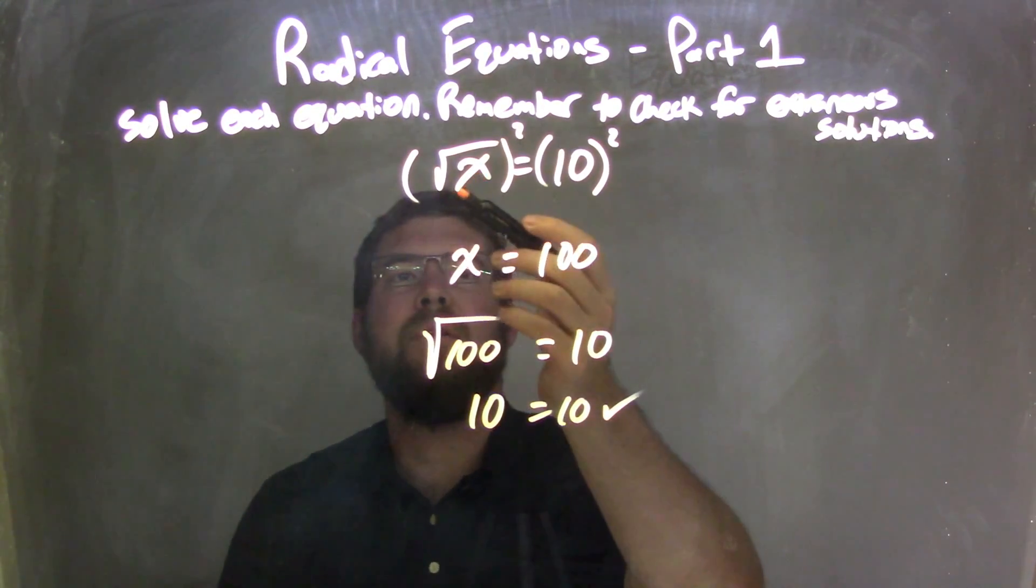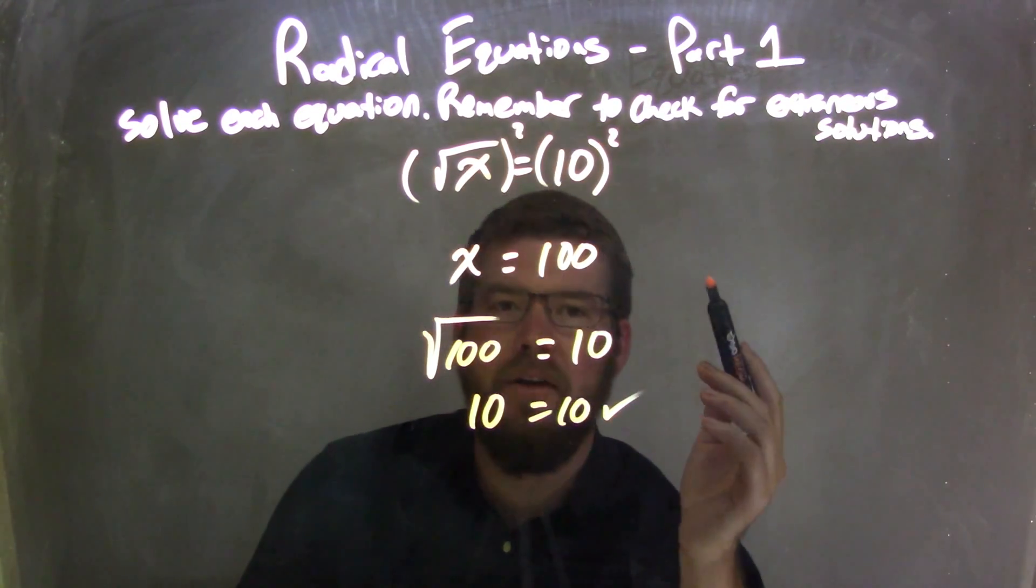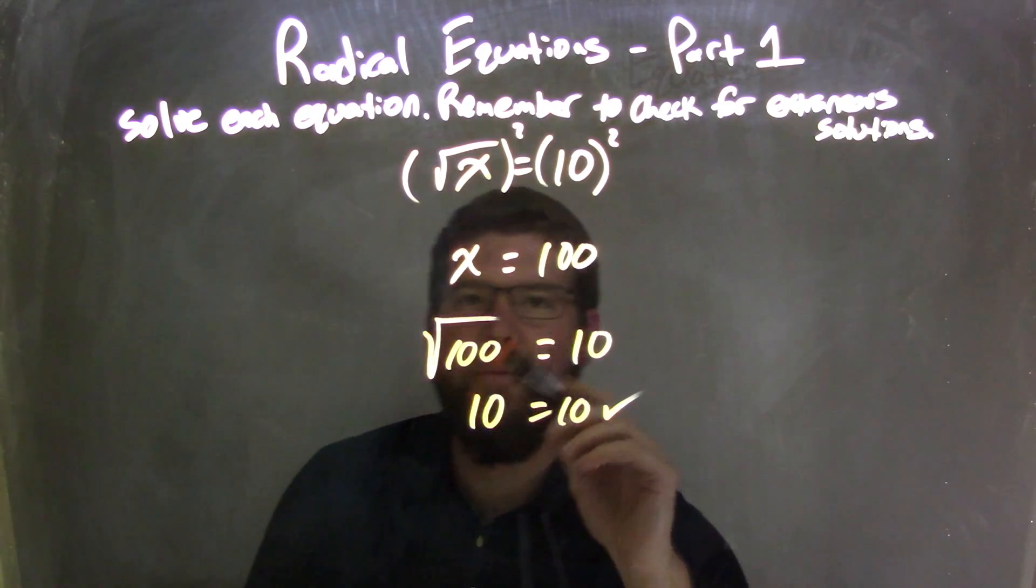So, let's recap. We started with the square root of x equals 10. To get rid of that square root, I need to square both sides of the equation. What that does is leave us with just an x here on the left and 100 on the right.